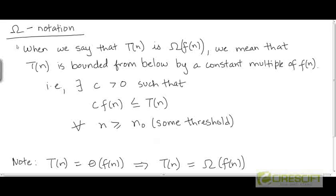As you can guess, if we have a notation called Big O notation to capture the fact that the given function t is bounded from above by some constant multiple of f, there must be a corresponding notation to capture the fact that t might be bounded from below by some constant multiple of f.